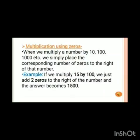Let's learn multiplication using zeros. When we multiply a number by 10, 100, 1000, etc., we simply place the corresponding number of zeros to the right of that number. For example, if we multiply 15 by 100, we just add two zeros to the right of the number and the answer becomes 1500.